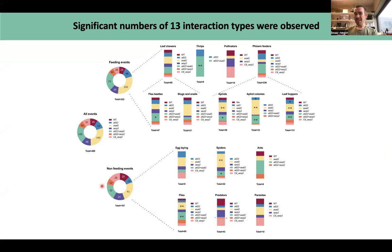I categorized interactions by different types and guilds: feeding events and non-feeding events. The question of what counts as an event matters — if I come to a plant and see five leafhoppers on it, is that one event? Since the plant is one genotype, I score one plant with one insect type as one event. So even five leafhoppers on a plant counts as one leafhopper event. We saw around 500 events comprising around 600 different invertebrates, with roughly a two-to-one ratio of feeding to non-feeding interactions.